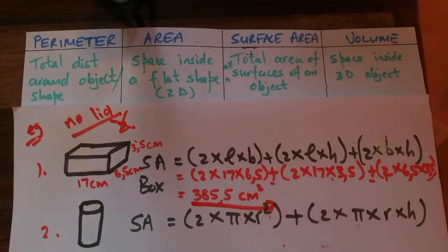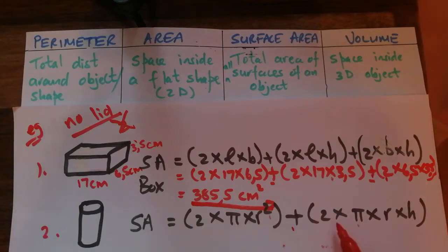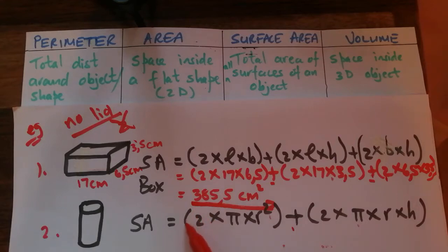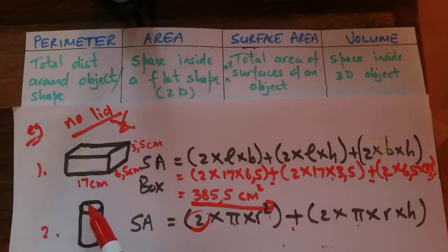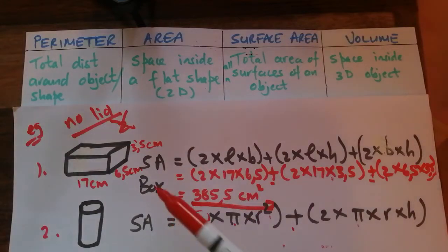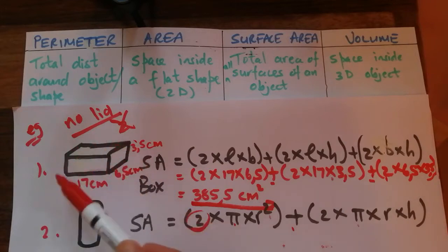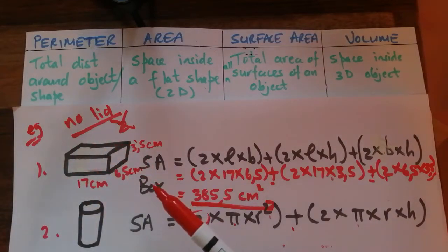When it comes to a cylinder, the equation will be provided: Surface Area = 2πr² + 2πrh. If the cylinder does not have a lid, you do not multiply by the first two. Remember, πr² is the area of a circle, so that two accounts for the top and bottom circles. Note: in the exam, rather than asking for surface area directly, you could be asked to calculate the amount of cardboard or material needed to make the object.